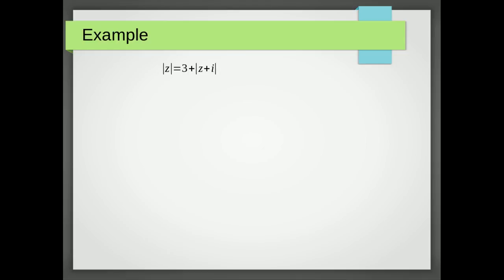Okay, here's our example. This one will be slightly more involved. So the first thing we do is we let z equal x plus iy. We substitute it in and we group the real and imaginary parts.